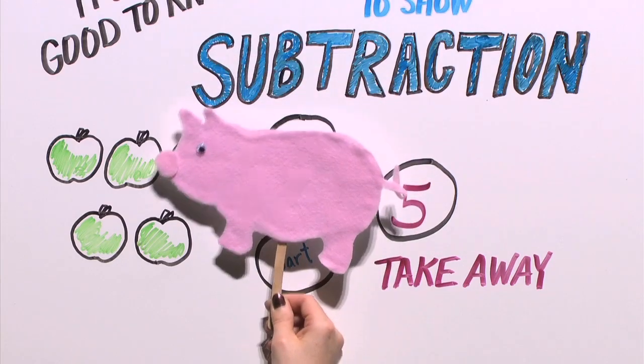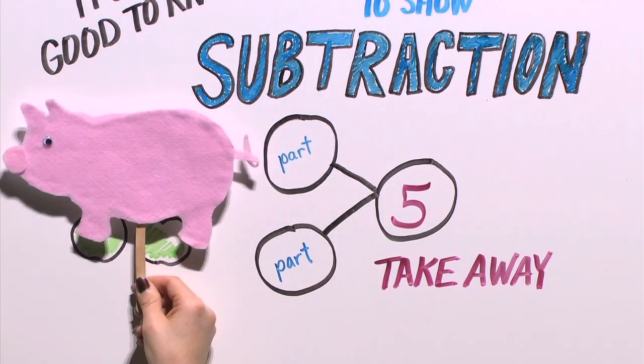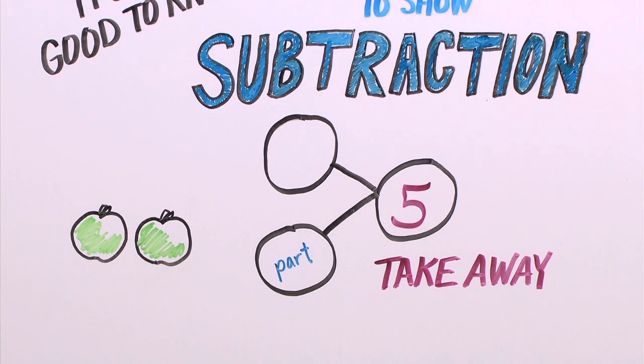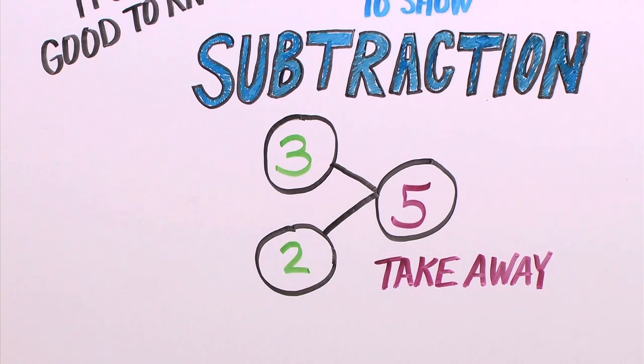A hungry pig comes along and eats three apples. The pig took away three apples, so three is a part of our number bond. There are two apples left, so two is the other part.